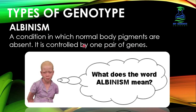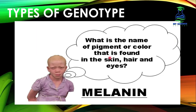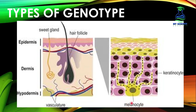Albinism is a condition in which normal pigments are not produced inside an individual's body. Because of the absence of body pigments, that person's hair, skin, and eyes are pale, white, or colorless. The pigment or color found in skin, hair, and eyes is called melanin. Melanin is a body pigment responsible for our hair, eye, and skin color. Melanin is found in melanocytes — cells present in our skin that are responsible for melanin production. The amount of melanin produced differs in different organisms; more melanin means darker skin, hair, and eyes.